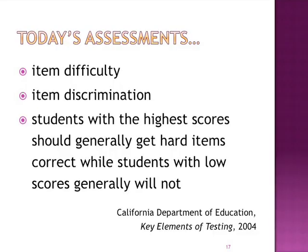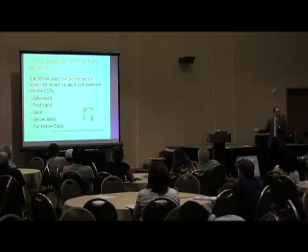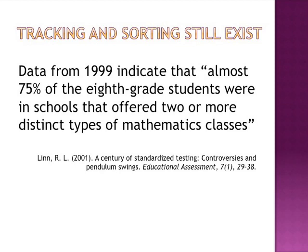Look at our CSTs. The driving principles of the state exams in this state are item difficulty and item discrimination — the ability of these items to differentiate kids and separate them. If all kids did equally well on the exam, the exam would have to be rewritten. And yet we give the exams and sort kids into — oh, it's the ghost of Terman — five levels: advanced, proficient, basic, below basic, very below basic. We continue to track and sort our students because it's a historical legacy we have not shaken.